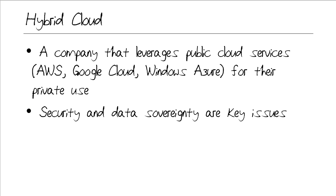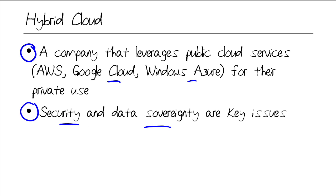Finally, the hybrid cloud is the best of both worlds. This is where a company leverages public cloud services such as Amazon Web Services, Google Cloud, and Windows Azure for their own private use. So you can let the service provider take care of all the expensive infrastructure, and you still have that security. However, data security and data sovereignty are the key issues at play with hybrid clouds.